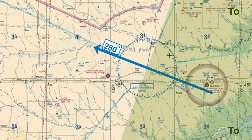The TO side as it relates to the 280 degree radial we will represent with a faded green shaded color. The FROM side as it relates to the 280 degree radial we will represent with the faded red shaded color.